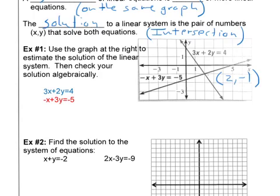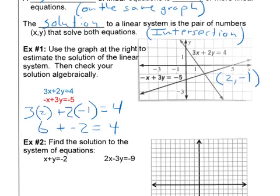So first we're going to check 3x plus 2y equals 4. And since the x is 2, I'm going to plug in a 2. Plus 2y, where the y is negative 1, equals 4. 6 plus negative 2 equals 4. And sure enough, that's true. 6 minus 2 equals 4. So it works for the blue one.